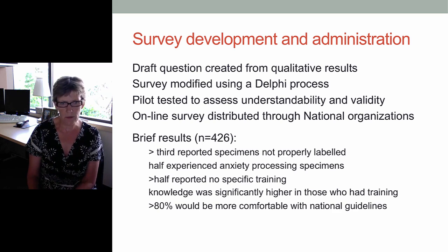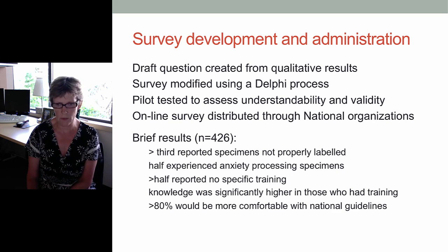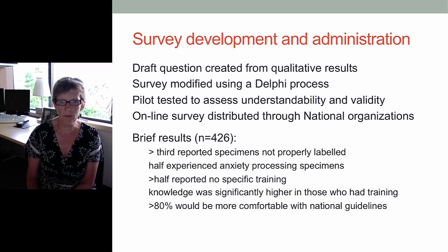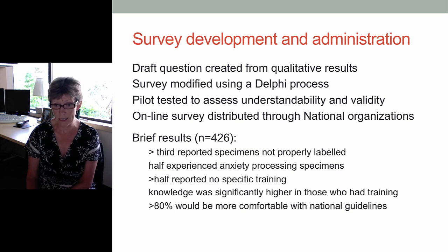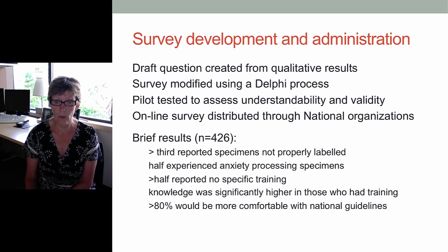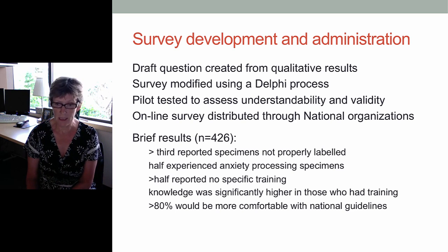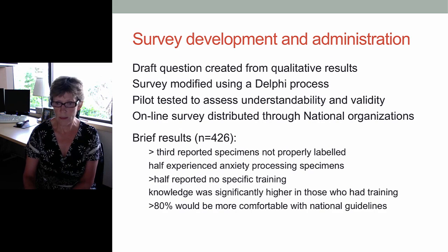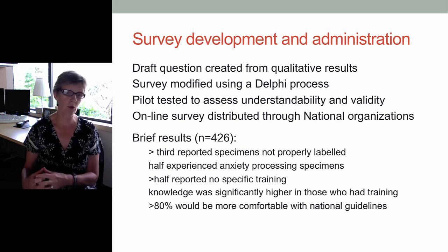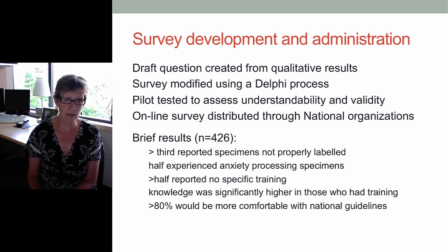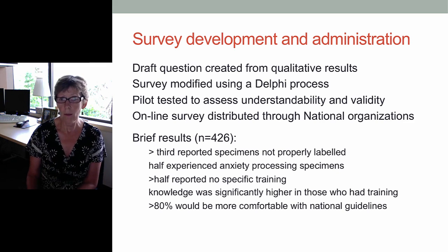We sent out the survey and had 426 usable results. A third of those who responded reported specimens were not properly labelled. Half experienced anxiety processing the specimens. Over half reported that they had received no specific training. We also found that knowledge was significantly higher in those who had training — not surprisingly — and that over 80% would be more comfortable with national guidelines. What that told us was that there were areas where we could intervene to improve people's confidence in working. But before we started, we didn't really know what the issues were and what questions to ask.